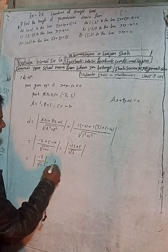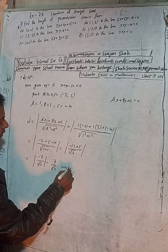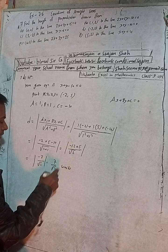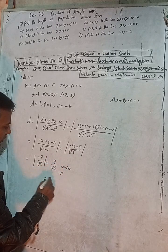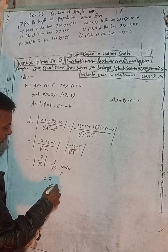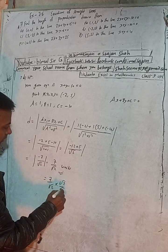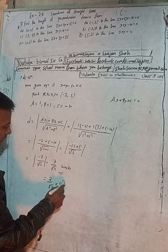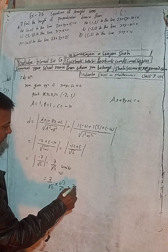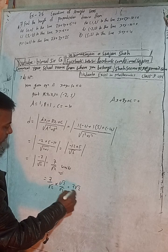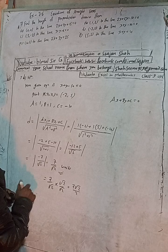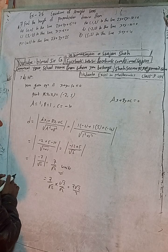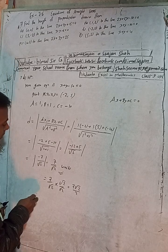You can also rationalize the answer: 7/√2 × √2/√2 = 7√2/2. So the answer is 7/√2 or equivalently 7√2/2 units as given in the book.